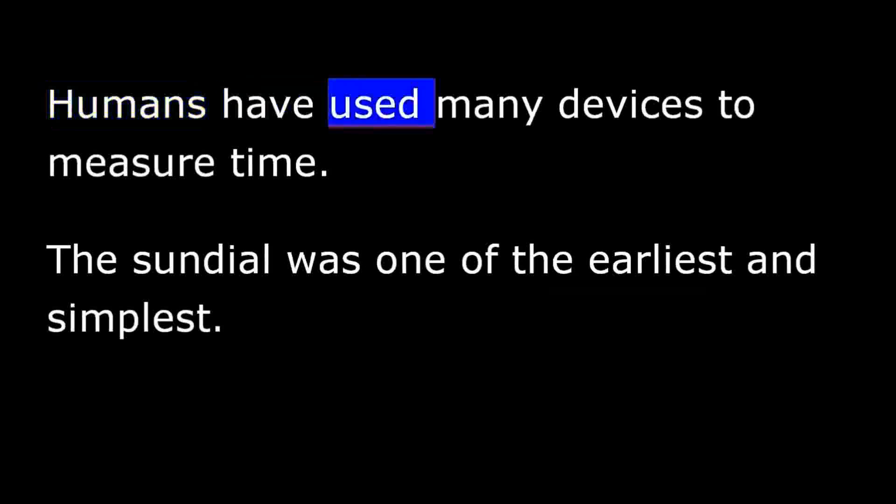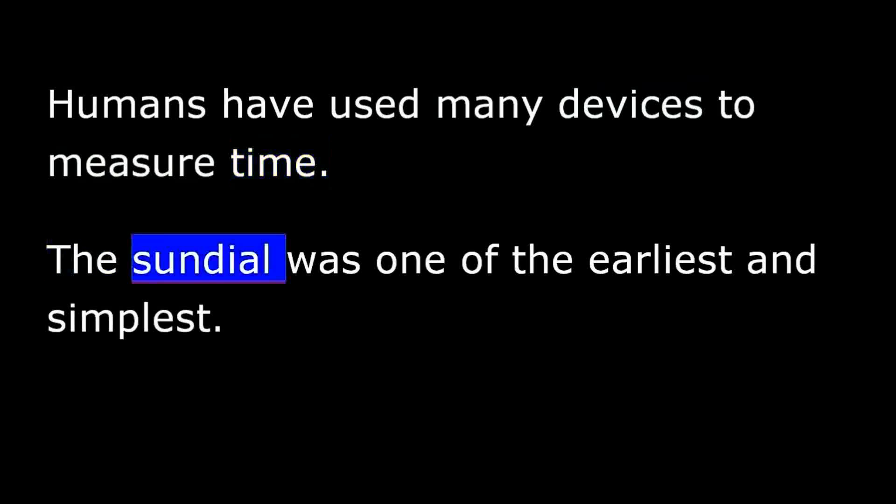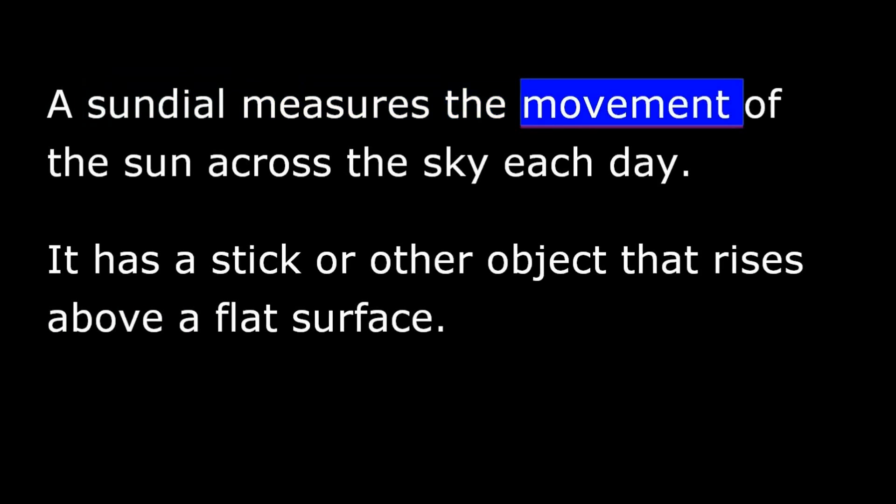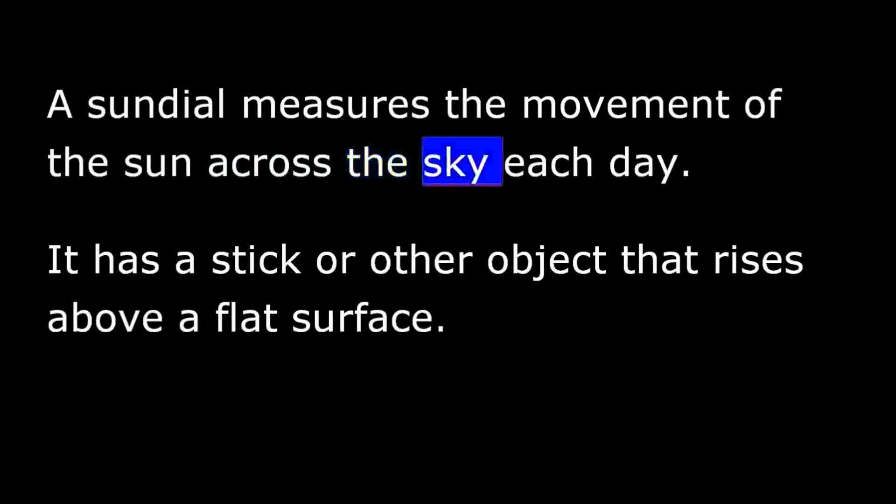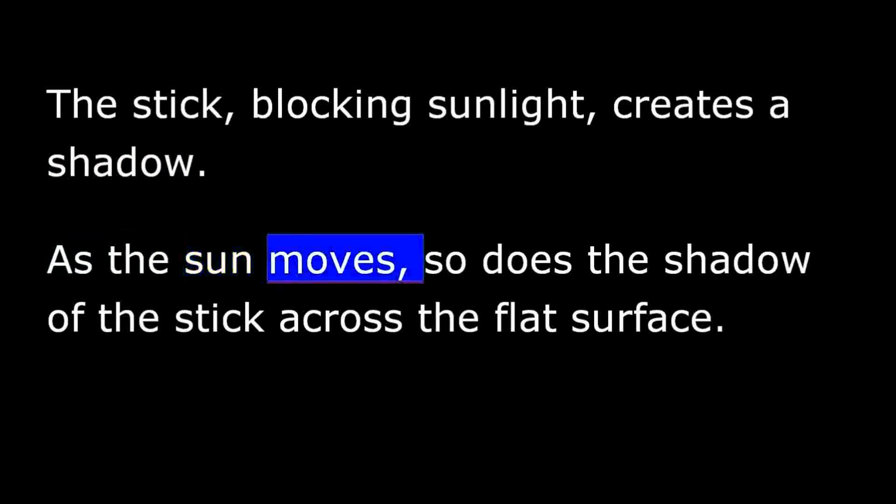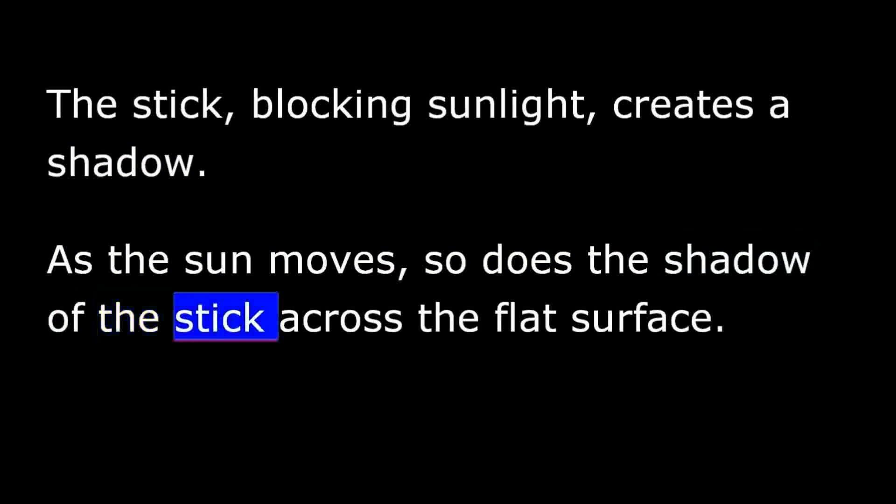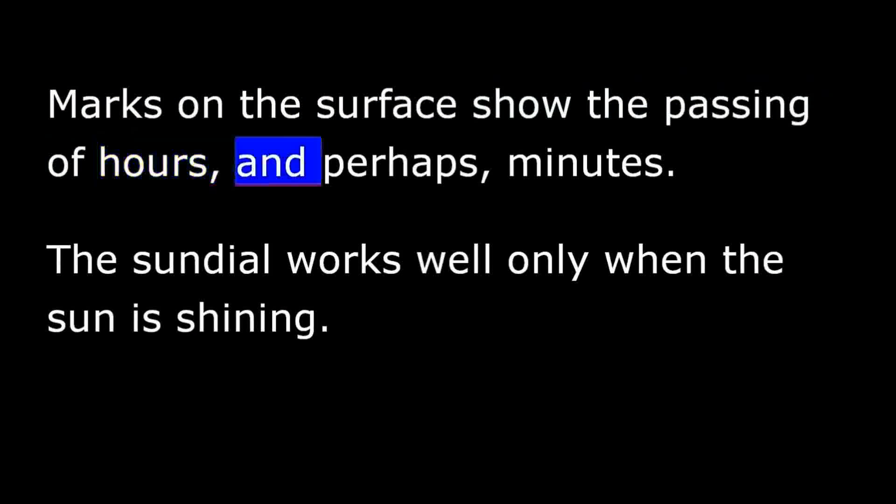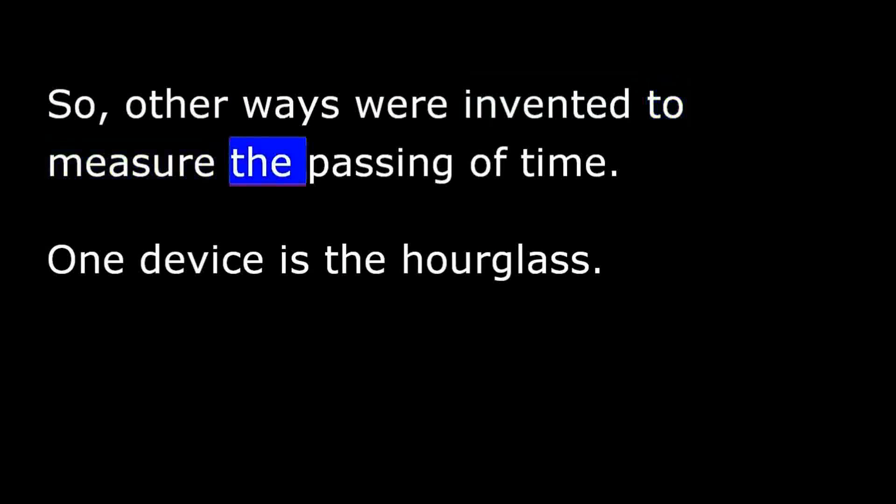Humans have used many devices to measure time. The sundial was one of the earliest and simplest. A sundial measures the movement of the sun across the sky each day. It has a stick or other object that rises above a flat surface. The stick blocking sunlight creates a shadow. As the sun moves, so does the shadow of the stick across the flat surface. Marks on the surface show the passing of hours and perhaps minutes. The sundial works well only when the sun is shining. So other ways were invented to measure the passing of time.